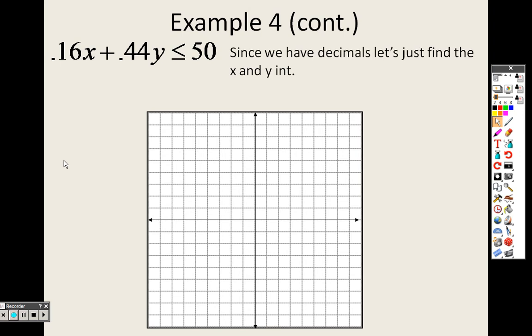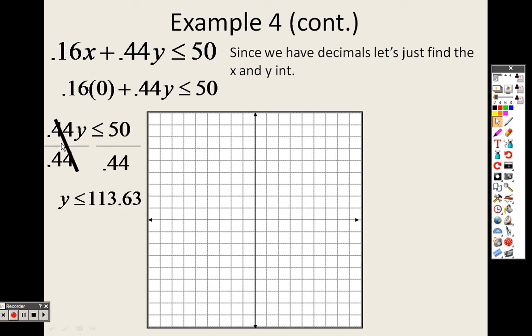So to solve this, I have to rewrite this. The easiest way to do this, I think, would be to do the X and Y intercept, which is why I started by plugging a 0 in here. Because if I plug in a 0, then all I have to do is solve this little equation, which means I divide both sides by 0.44, and I get 113.63. So that first point I have to plot is 0, 113.63.